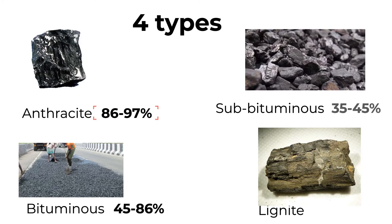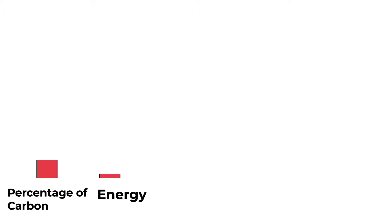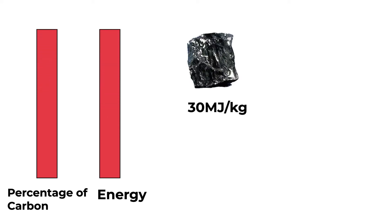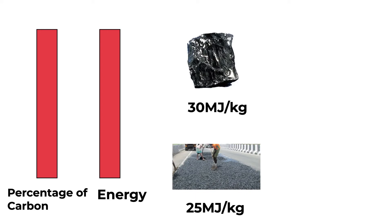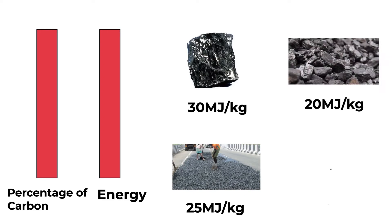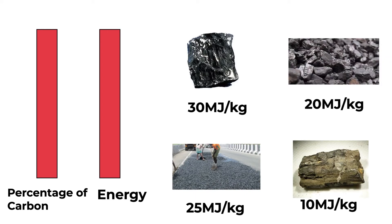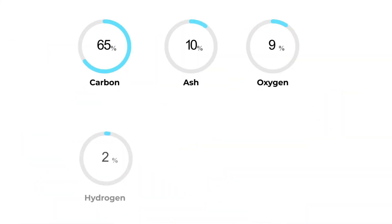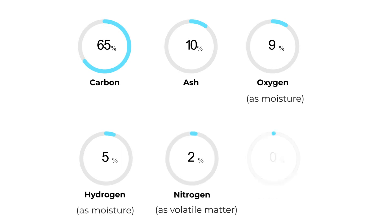Anthracite contains the most carbon whereas lignite has the lowest carbon content, thus it is also called brown coal. The higher the carbon content, the higher the energy output from coal upon burning. Each kilogram of anthracite produces 30 megajoules of energy, whereas one kilogram of lignite produces around 10 megajoules of energy. In addition to carbon, coal contains moisture, ash, volatile matter, mercury, and sulfur.